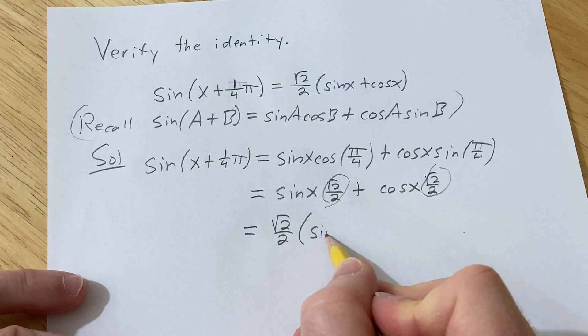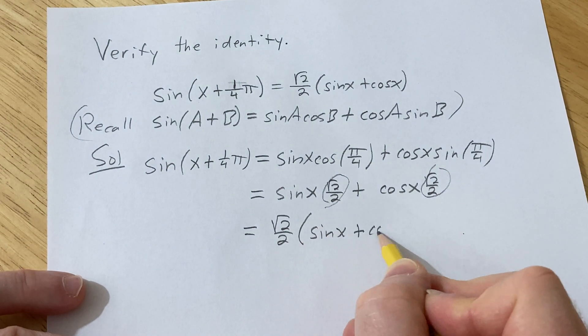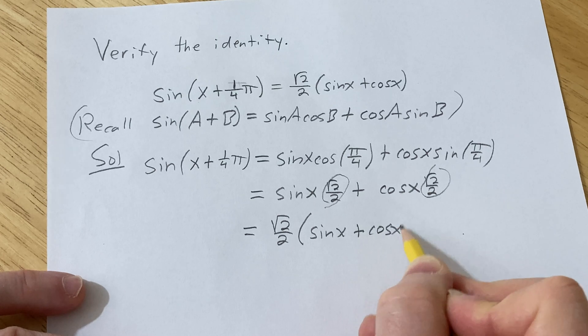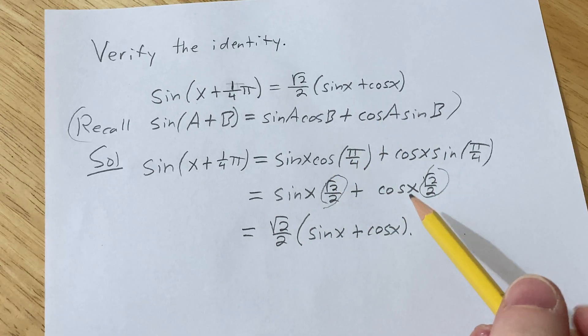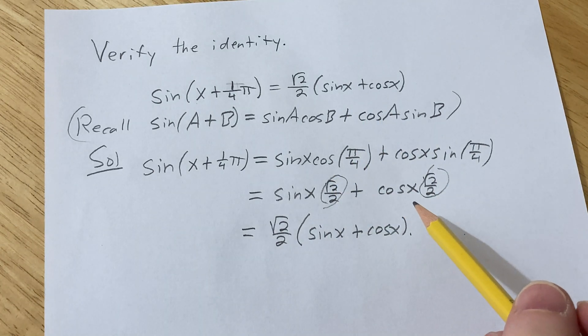So this is the square root of 2 over 2, times the quantity sine x plus cosine x, which is exactly what we wanted. I hope this helps.